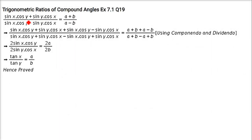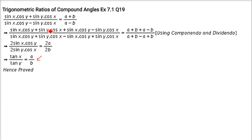Next problem: sin(x)·cos(y) + sin(y)·cos(x), divided by sin(x)·cos(y) minus sin(y)·cos(x). This equals (a + b)/(a − b). We have to prove that tan(x)/tan(y) equals a/b. Now this is sin(a)cos(b) plus sin(b)cos(a) — you can see that — but this is not a formula we can directly apply here.